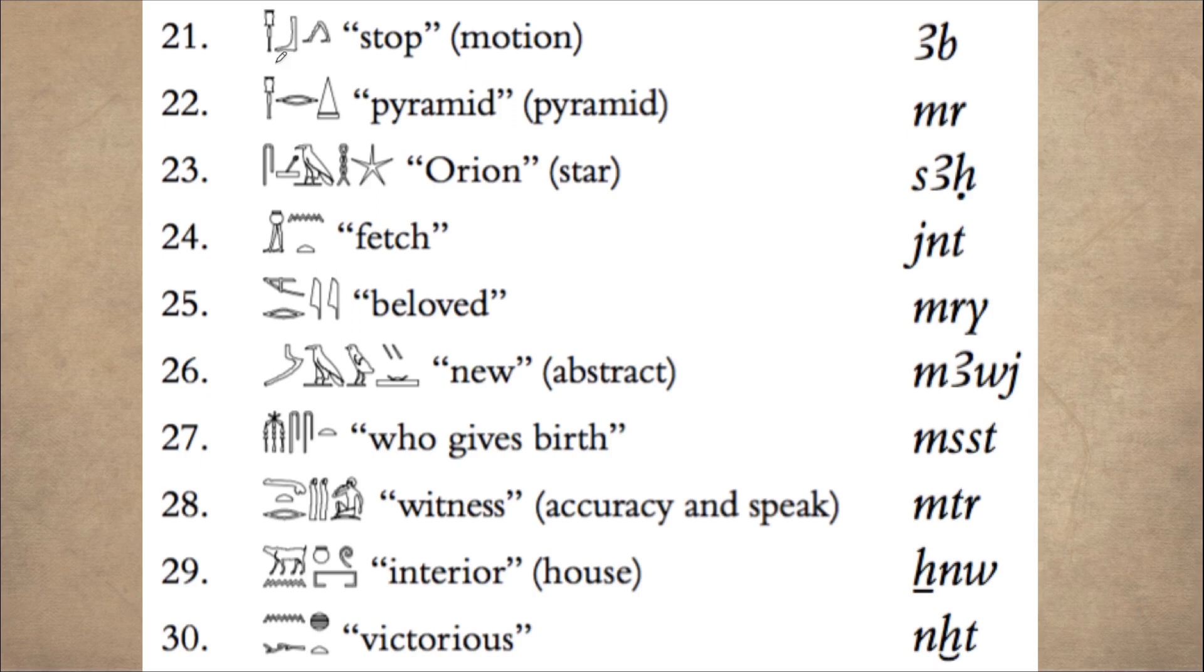Number 21 starts with the hieroglyphic ab, then the leg is b, and this is a determinative. Altogether, it means ab, and it's stop, the verb stop.